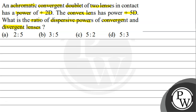Option A is 2:5, option B is 3:5, option C is 5:2, and option D is 5:3. So first of all, we will talk about the key concept used in this question.